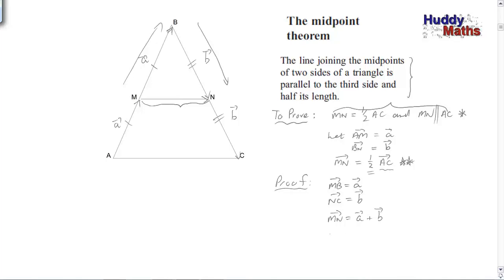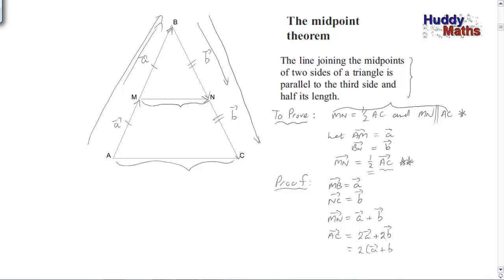Let's find AC in vector terms. AC — displacing from A right up to B and then down to C — gives AC equals 2a plus 2b, which is two lots of (a plus b). And we're done, because MN equals a plus b, and AC equals twice that. This implies MN is a half of AC, as required. The proof is finished.